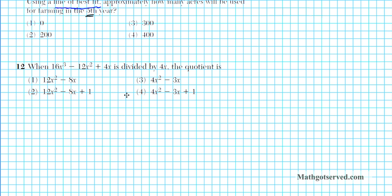Let's take a look at question number 12. It says when 16x³ - 12x² + 4x is divided by 4x, the quotient is... So what does this word quotient mean? Let's say I have 4 over 2 is equal to 2.